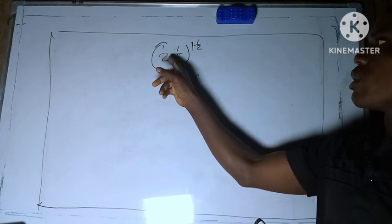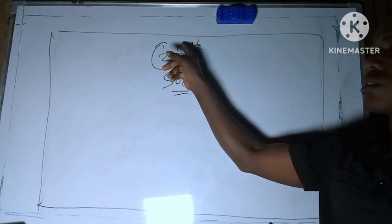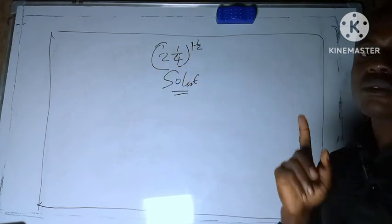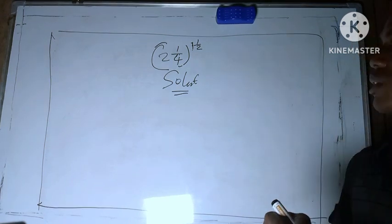You need this whole number to multiply the denominator and then add the numerator. So 2 times 4 to give you 8, plus 1 is what? 9.